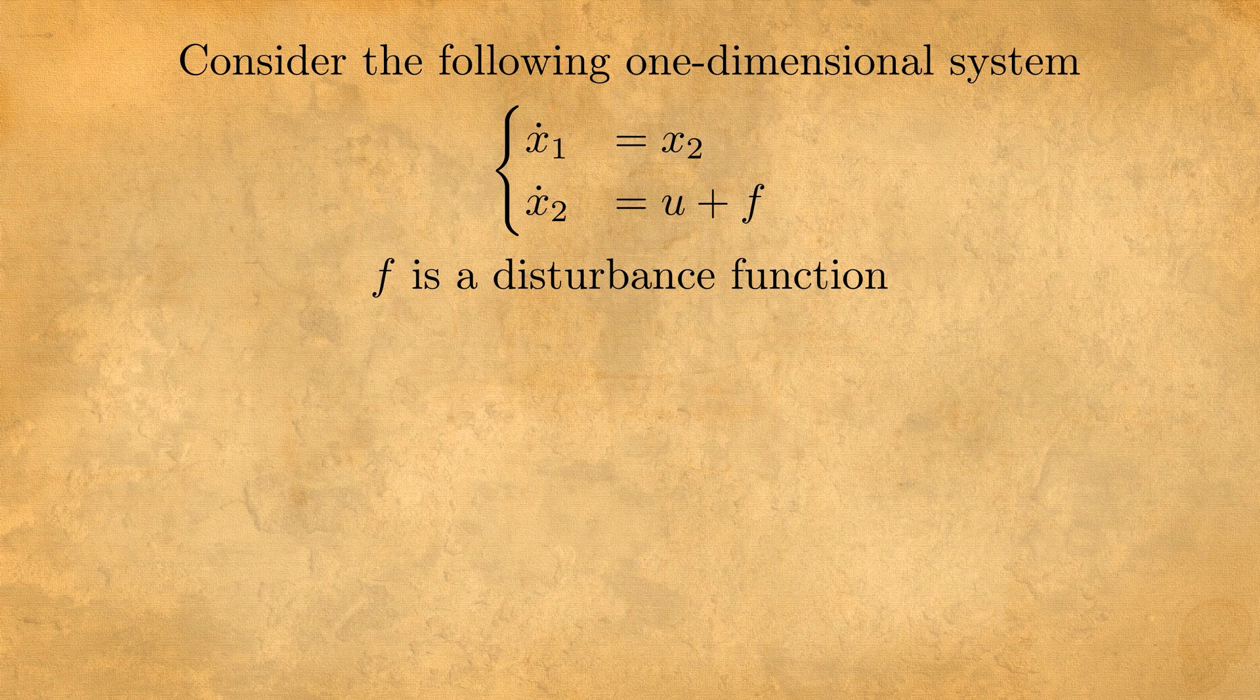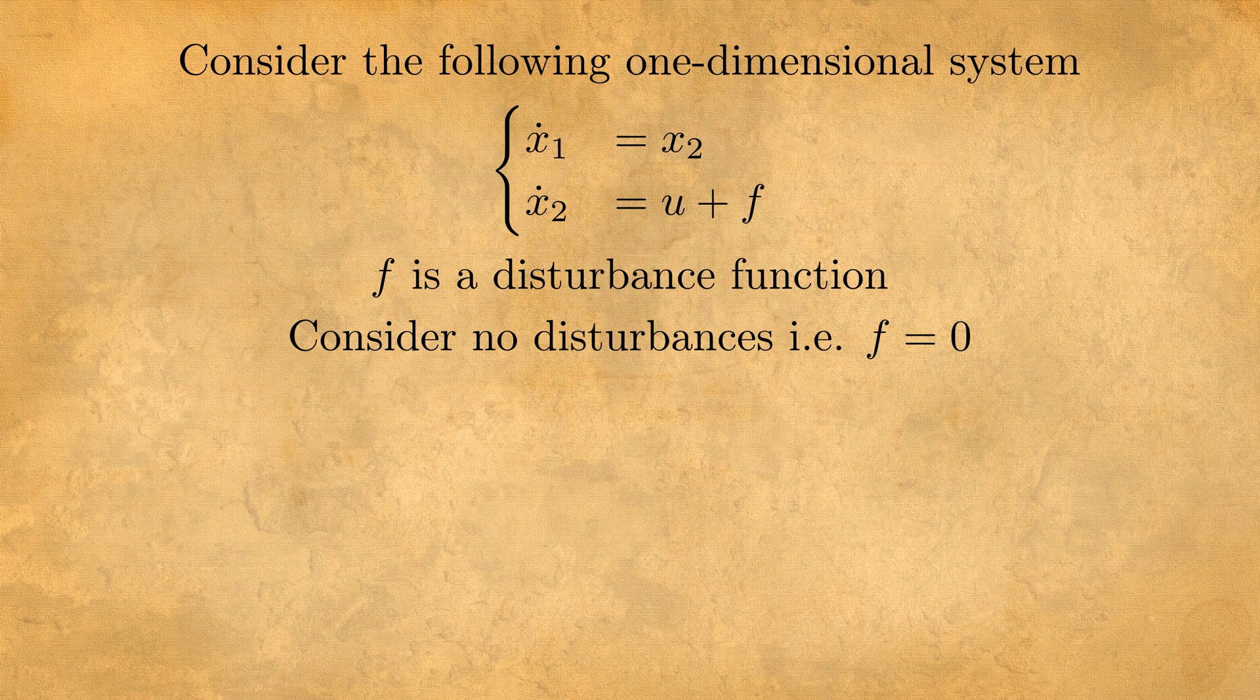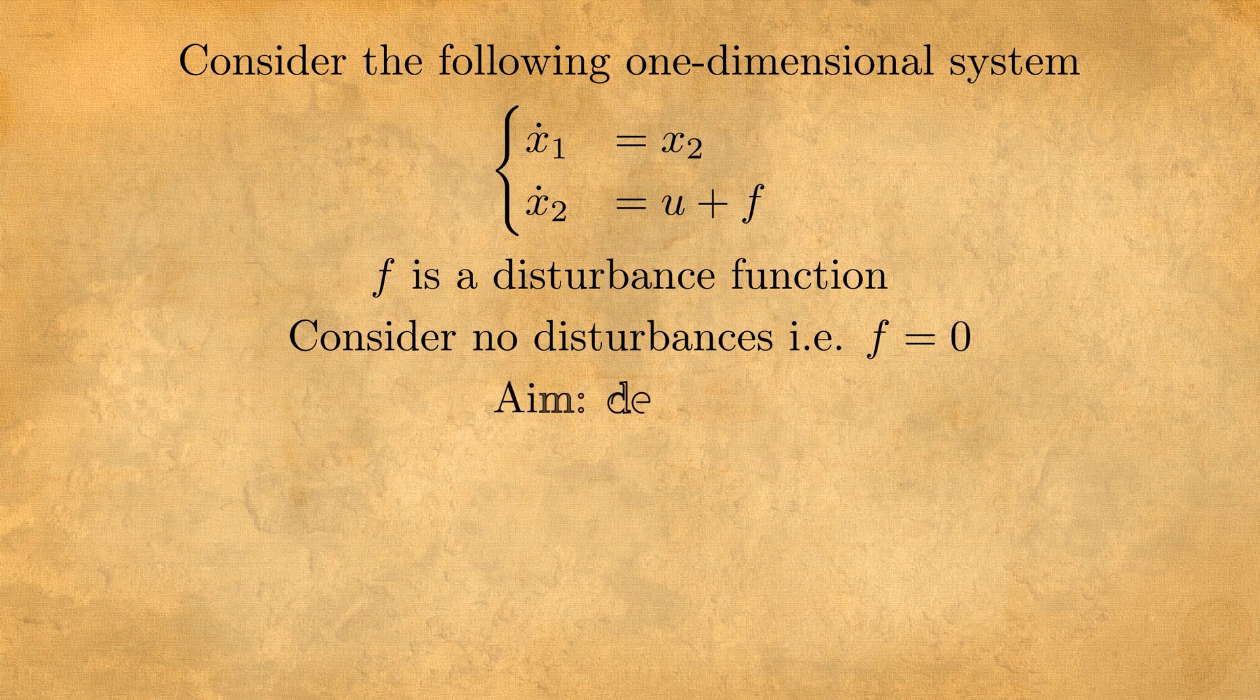At first we consider that there's no disturbance or f equals zero and our aim is to design u to make sure that both states converge to zero.